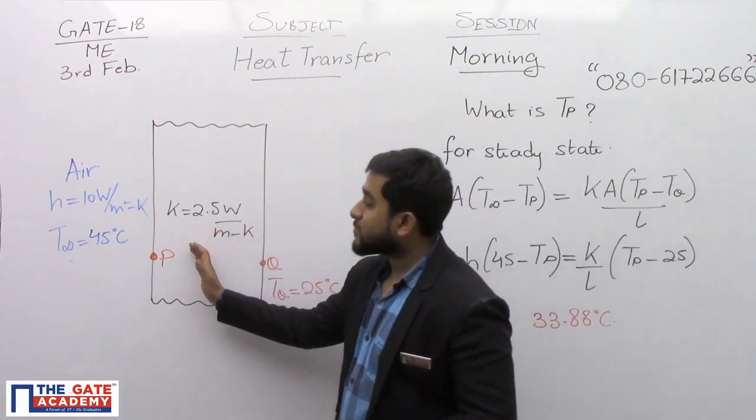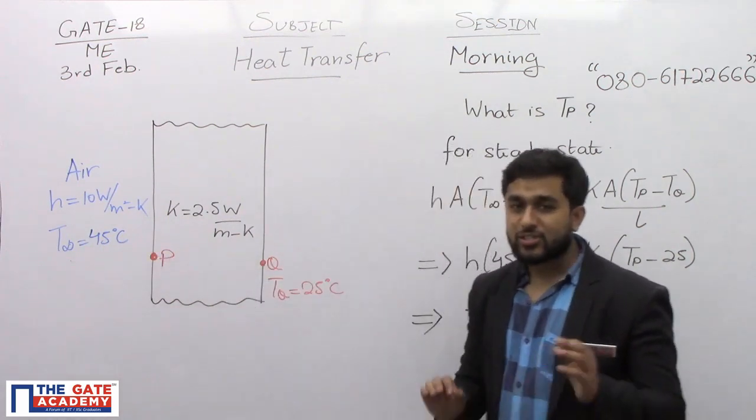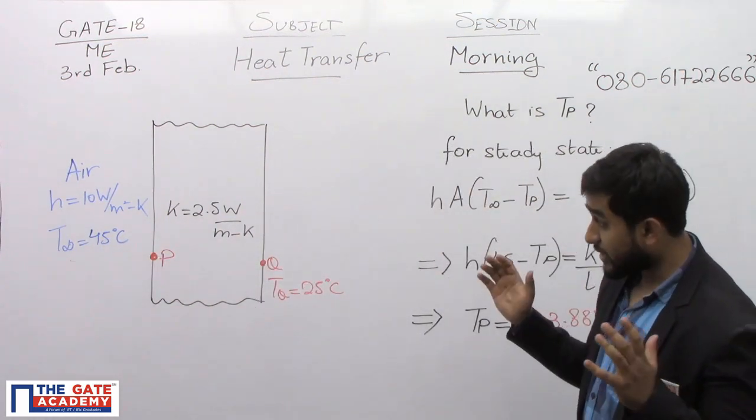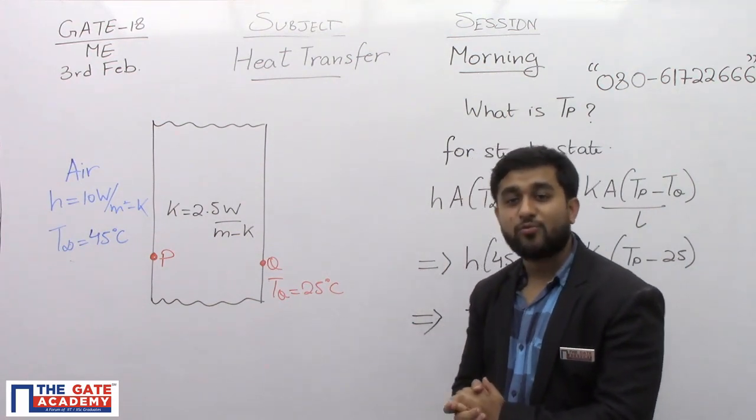This wall is exposed to air and the steady state conditions are H equals 10 Watt per meter square Kelvin and T infinite, the ambient air temperature, is equal to 45 degree Celsius.